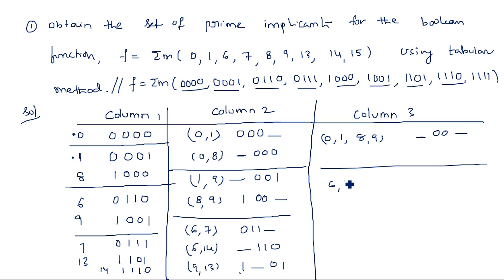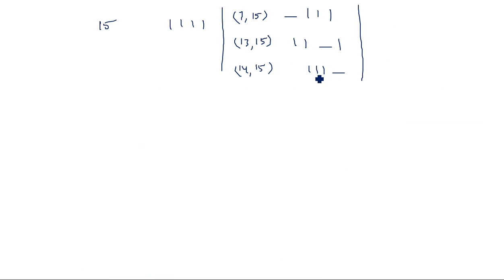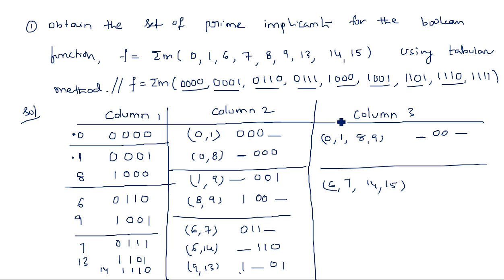From Column 2, comparing (6,7) with (14,15) gives the group 6,7,14,15 with expression -11-. Comparing (6,14) with (7,15) also gives 6,7,14,15. Beyond Column 3 we cannot go to Column 4 because there are no common terms — for example, -00- and -11- cannot be combined further. So the maximum possible reduction is reached.